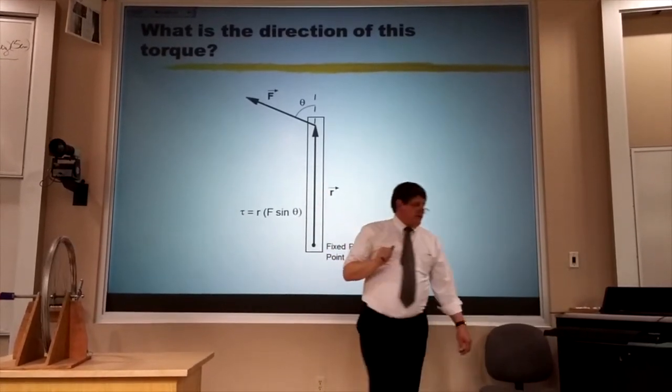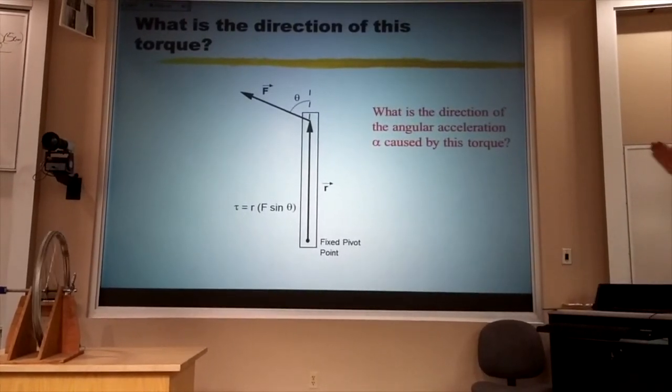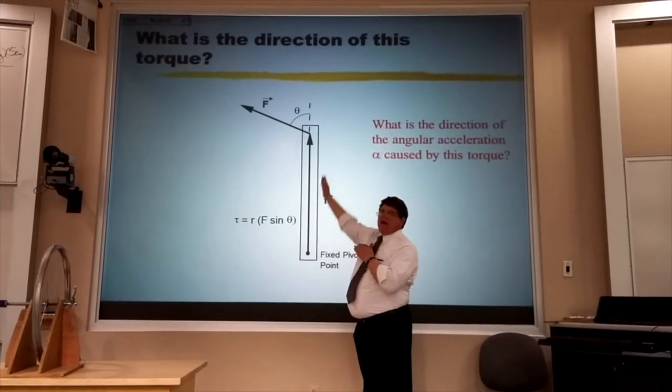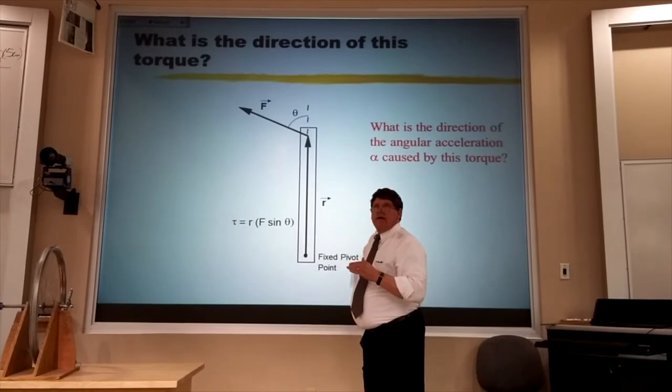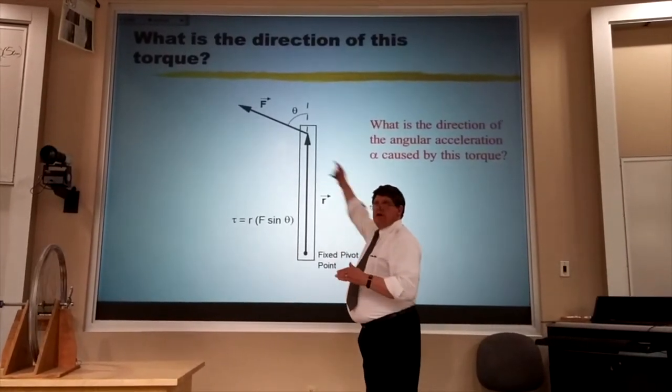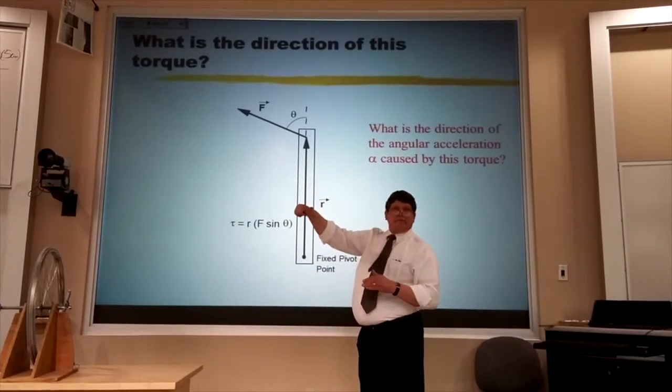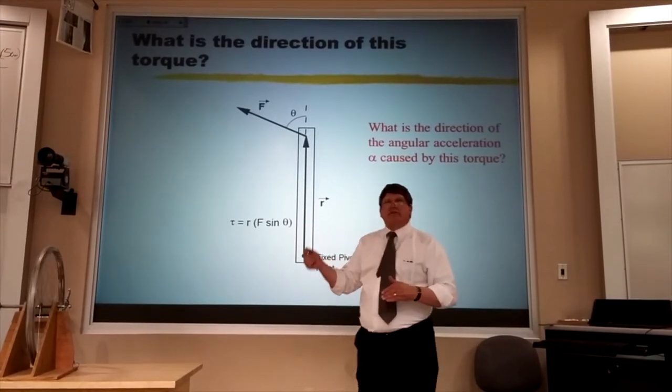Now if that force were acting always at that angle relative to this vector, this thing would start spinning counterclockwise. What direction would the omega point? Out of the board.